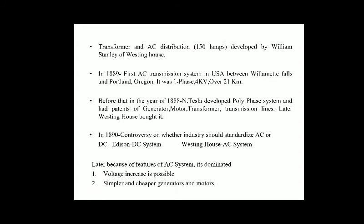Before that, in 1888, Nikola Tesla developed the polyphase system and held patents for the generator, motor, transformer, and transmission lines. Later, Westinghouse bought it. In 1890, there was controversy on whether industry should standardize on AC or DC — that is, Edison's DC system or Westinghouse's AC system invented by Nikola Tesla. Eventually, AC dominated because of its superior features.